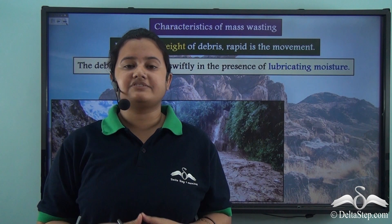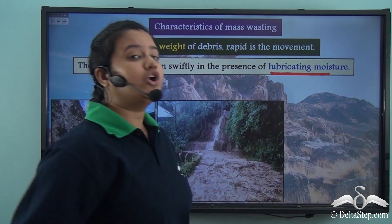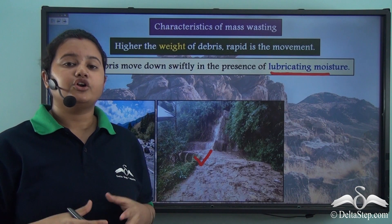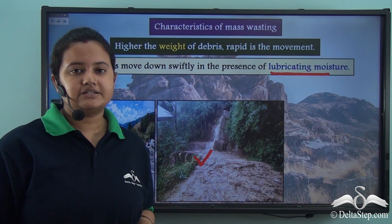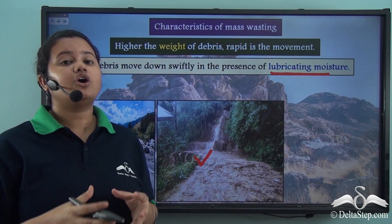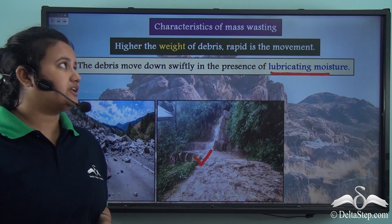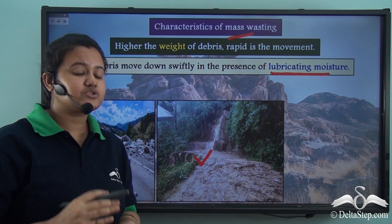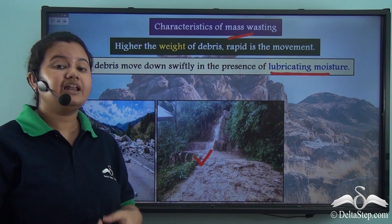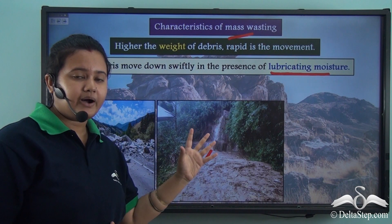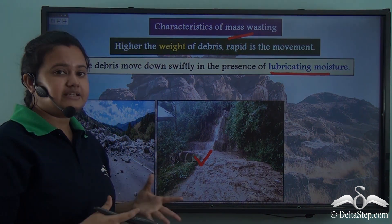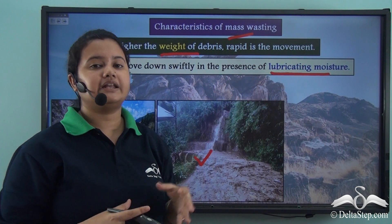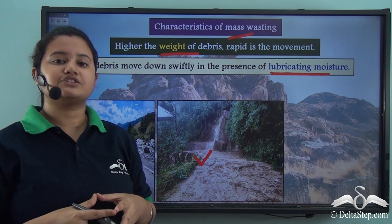The speed of mass wasting gets enhanced by the presence of lubricating moisture or lubricating agent like rainwater. Rainwater is an agent of gradation and it not only wears off or disintegrates rock particles but also helps in transportation of weathered rock materials. In the presence of rainwater, friction between the weathered materials and the ground surface is reduced, so rock particles move down very rapidly. Also, when weathered rock particles are saturated with rainwater, the weight of debris rises, making mass wasting more rapid.